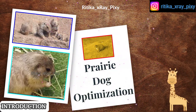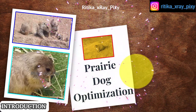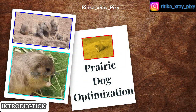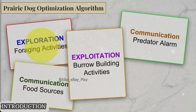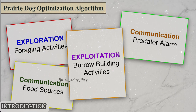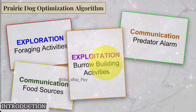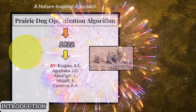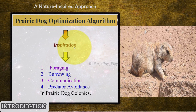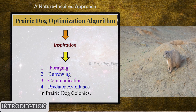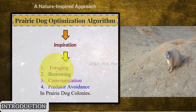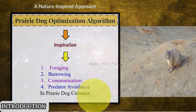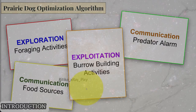In this video we will try to understand a new optimization algorithm: the Prairie Dog Optimization Algorithm. This simple creature, the prairie dog, inspires this algorithm based on its real-life behavior. The algorithm works by combining different mathematical models for population initialization, exploration, exploitation, and other aspects. Step by step, we will try to understand how this algorithm works.